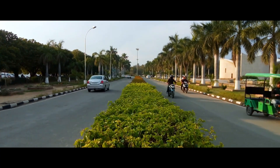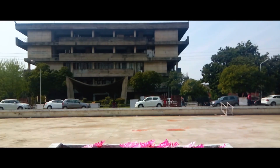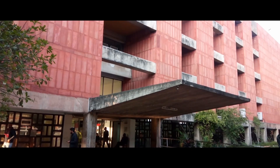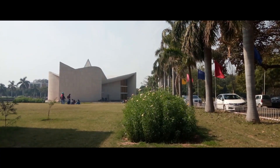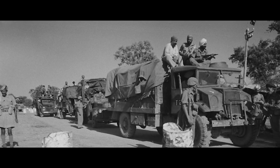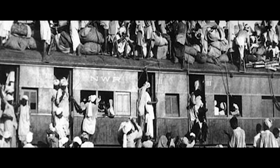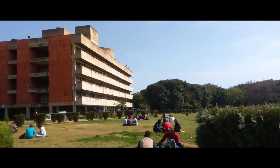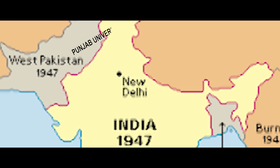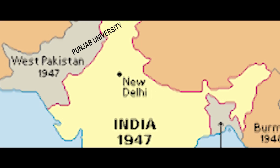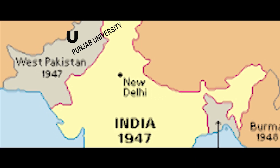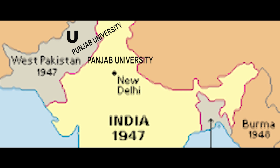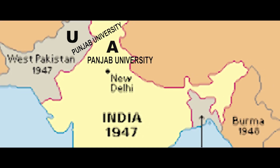PU traces its origin to the University of the Punjab established by the British in 1882 in Lahore, in what was then undivided India. After the independence and subsequent partition of India in 1947, the University was split into two — one part for Pakistani Punjab and the other for Indian Punjab.